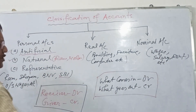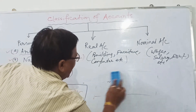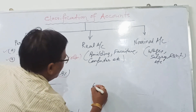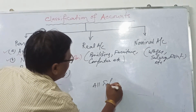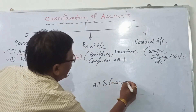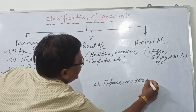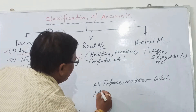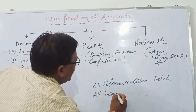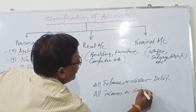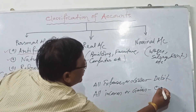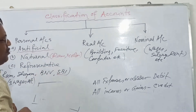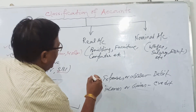The golden rules of nominal accounts: all expenses and losses are debited. All income or gains are credited. These are the rules of accounts.